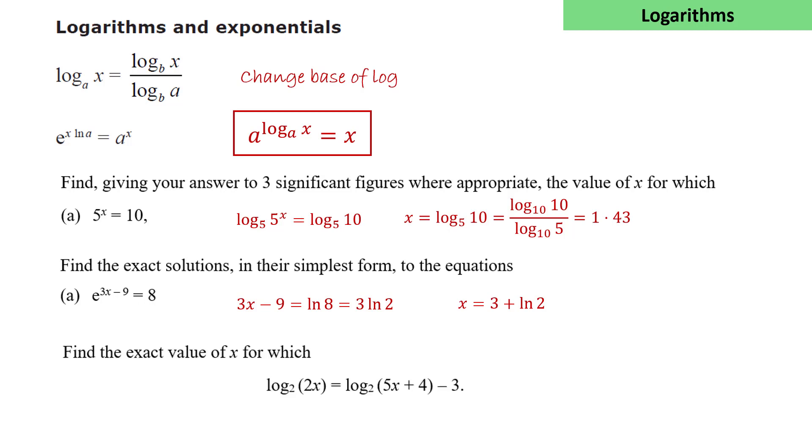One last example. Here we have an equation where we have two terms which are log to the base 2, and we have an ordinary number. We want to make everything logs to the base 2 so that we can combine them. So the -3 becomes -log₂(2³).